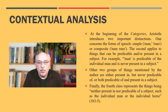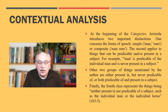Aristotle introduces two important distinctions at the beginning of the Categories in chapter two. One is about the forms of speech — simple, like 'man,' or composite, like 'man runs.' The second applies to things that can be predicable of and/or present in a subject. For example, I quote, 'man is predicable of the individual man and is never present in a subject.'